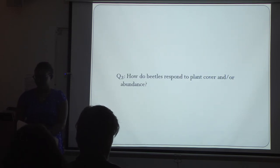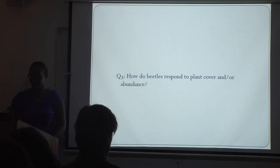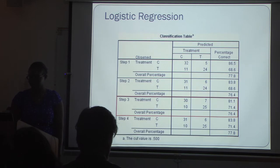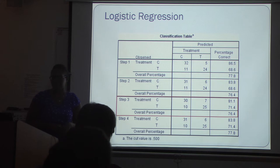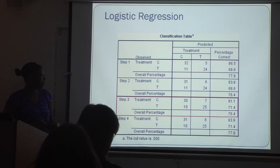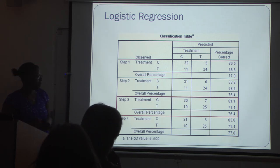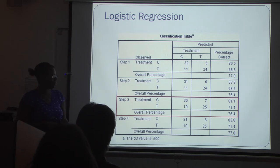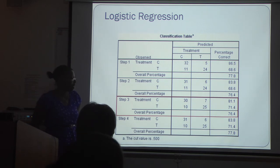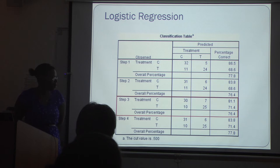For my last research question — how do beetles respond to plant cover and/or abundance? — I used a stepwise binary logistic regression. I determined that step three was the best fit for my model, since the percentage correct was fewer than 10 percent difference between 81.1 percent and 71.4 percent.